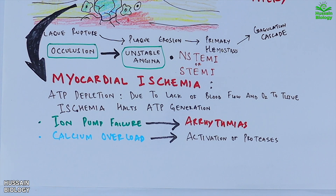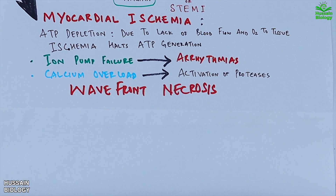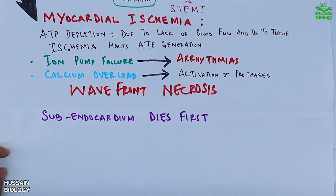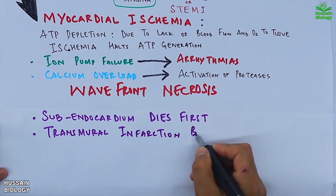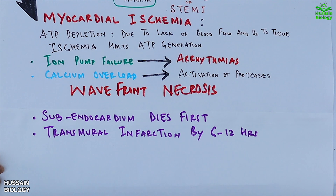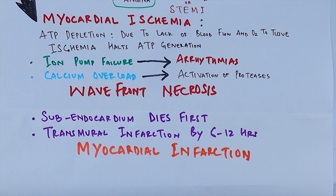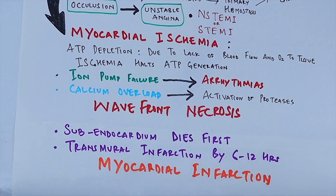These events kick off what is called wavefront necrosis, where cell death begins and spreads like a wave through the heart muscle. The subendocardium — the innermost layer of the heart wall — is the first to die because it is farthest from the oxygen-rich blood supply. If the blockage is not relieved, the entire thickness of the heart wall — transmural infarction — can die within six to twelve hours. At this point we have a myocardial infarction: permanent damage to the heart muscle.